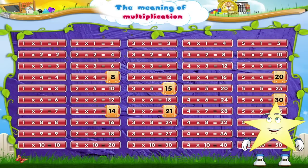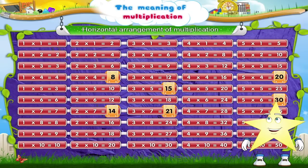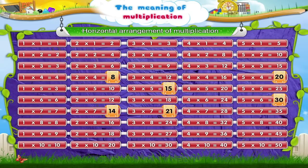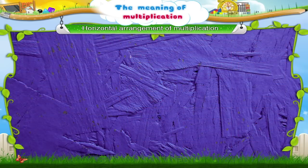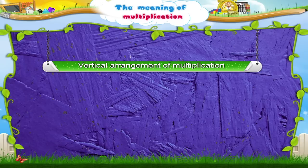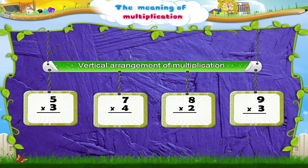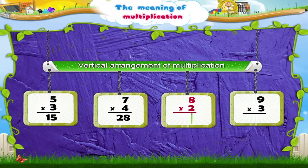Now all these tables were written in a horizontal way. But do you know that they can also be written in a vertical arrangement? That is, one below the other, like this. So five threes are — Fifteen. And seven fours are — Twenty-eight. Now eight twos are — Sixteen. And nine threes are — Twenty-seven.